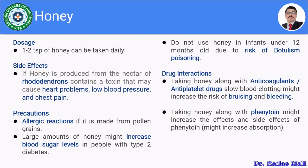Regarding side effects: honey is a sugar secretion collected by honeybees and generally should not cause sudden side effects. However, there are two important side effects. First, it should be avoided in infants. Second, if honey is produced from the nectar of rhododendrons, which contains a toxin, it may cause heart problems, low blood pressure, and chest pain.